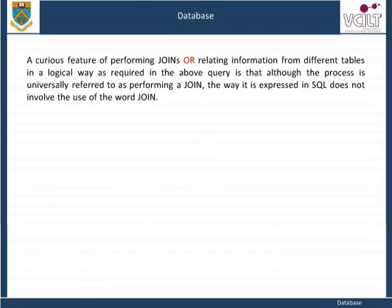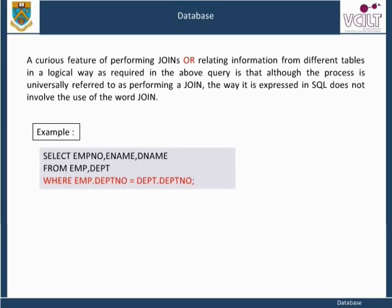A curious feature of performing joins, or relating information from different tables in a logical way, is that although the process is universally referred to as performing a join, the way it is expressed in SQL does not involve the use of the word join. This can be particularly confusing for newcomers to joins. The way it is expressed is in fact via the WHERE clause. Here is an example of the WHERE query. What this is expressing is that we wish rows in the employee table to be related to rows in the department table by matching rows from the two tables whose department numbers are equal.